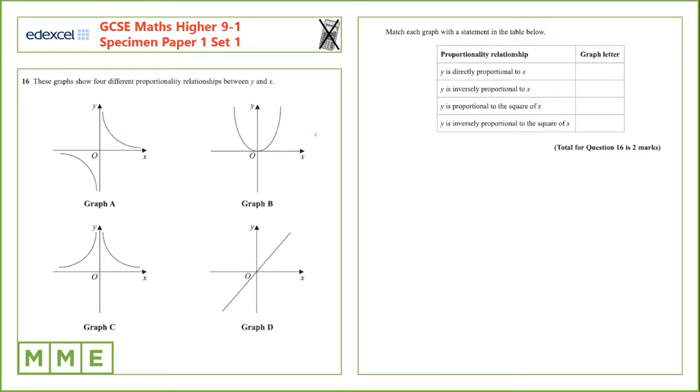Question 16. These graphs show four different proportionality relationships between y and x. Match each graph with the statement in the table below.